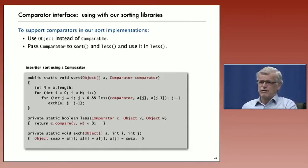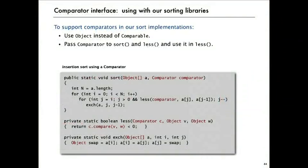In our sort implementations, we can change them as shown in this example to support comparators. To support comparators in our sort implementations, we'll pass an array of objects instead of array of comparable, and then as a second argument, pass a comparator. Then the less method will take that comparator as an argument, and it's the one that actually invokes the method compare of two different keys. This is a straightforward modification to our sorts. And then exchange, of course, rather than doing comparable, has to use object. So, with these straightforward changes, add the comparator's argument to the sort and to less, and make our array to be sorted array of objects. It's easy to convert any of our implementations to support comparators.